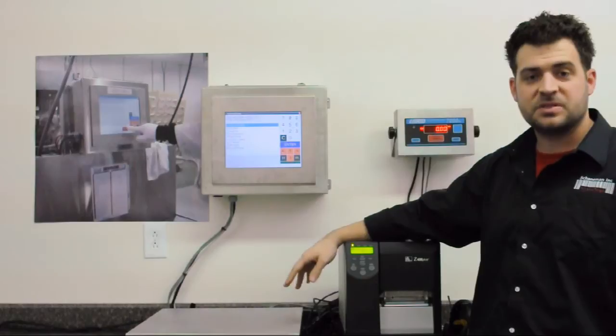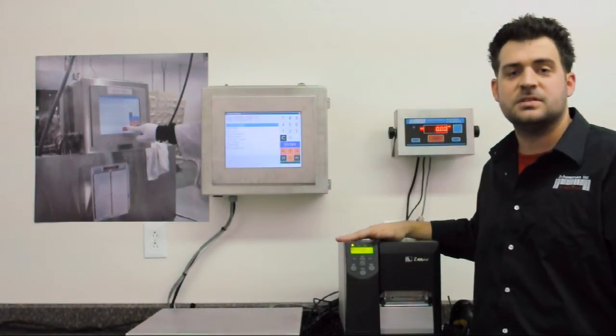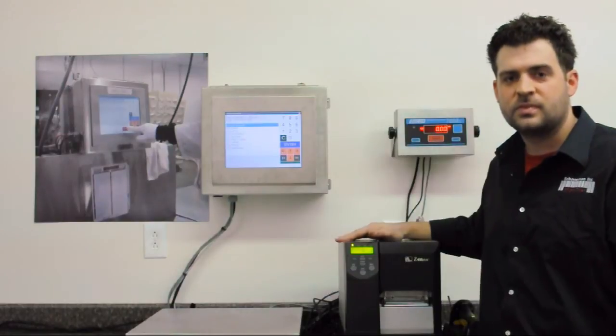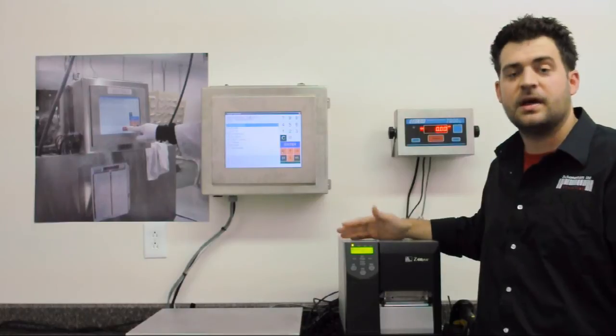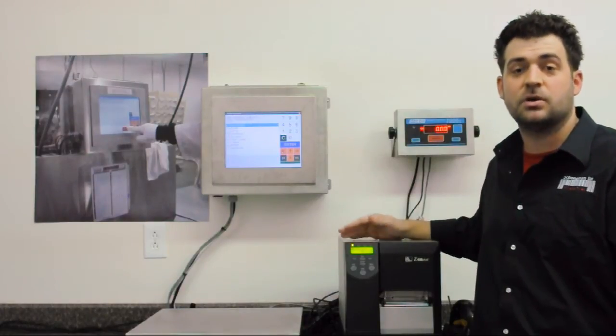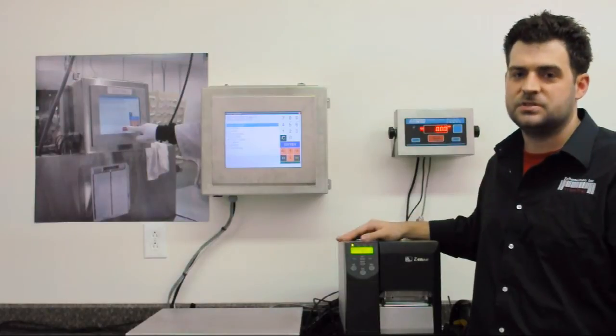We have a Duran platform scale. This is an XL7000. We have a Zebra label printer. This is a Z4M or a ZM400. Vistatrack can work with any scale that has RS-232 output or any label printer that has Zebra emulation such as Datamax or other brands that offer that. So you're not required to buy new hardware in order to use Vistatrack.